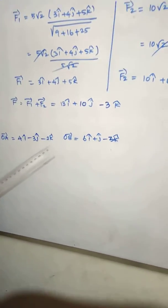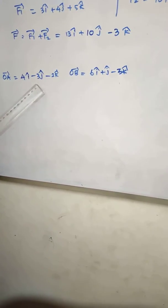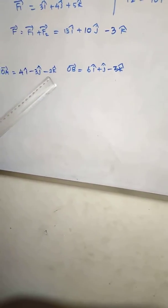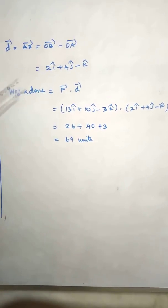So subtraction here: 6 minus 4 is 2, then 1 minus of minus 3 is 4, then minus 3 minus of minus 2 is plus 2, minus 3 plus 2 is minus 1, so minus K vector.